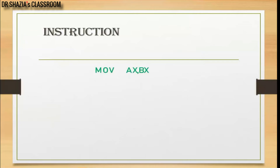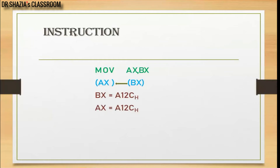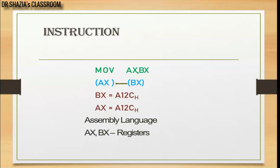Let us take an example to understand what an instruction is and how a microprocessor handles it. I have taken a simple instruction: MOV AX, BX. What this instruction does is it copies the content of the BX register onto the AX register. Let us assume the content of BX is A12C in hexadecimal. After executing MOV AX, BX, the content of AX will be the same as BX — so AX will update to A12C hex.